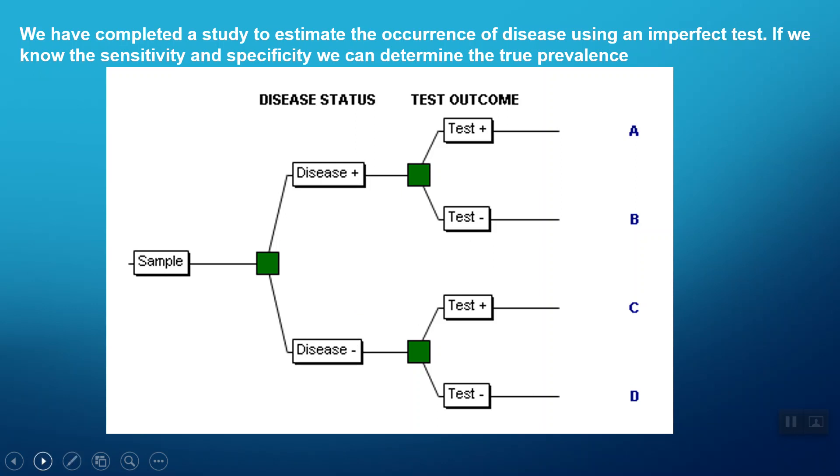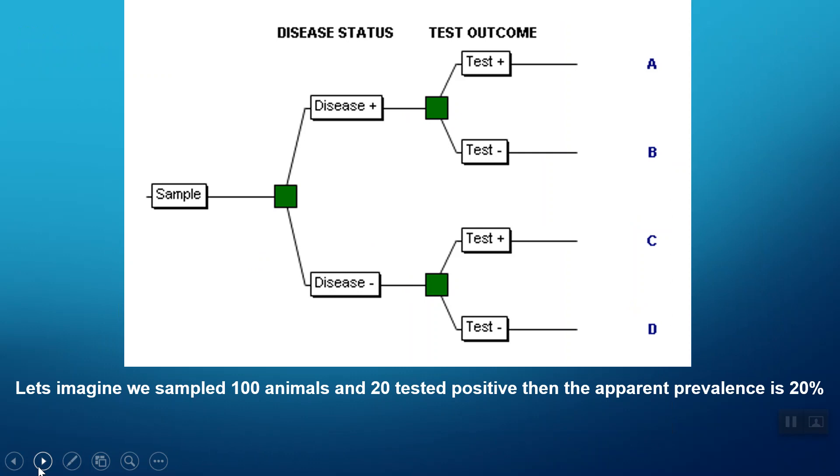So how do we use this information? Well, let's imagine we've sampled 100 animals and 20 tested positive. We now actually have the apparent prevalence, because that's pretty much what we always have—we know what proportion were test positive.